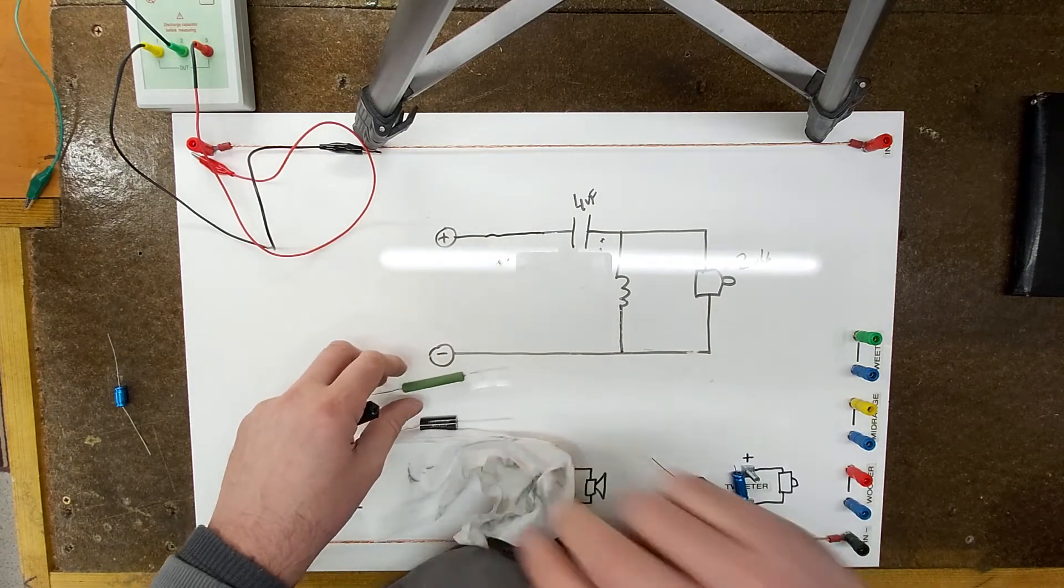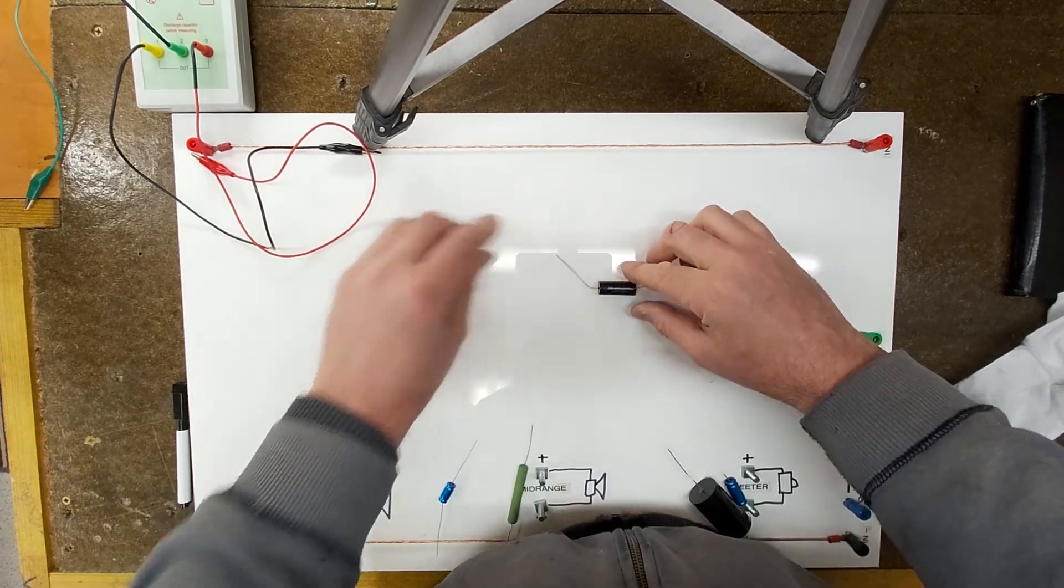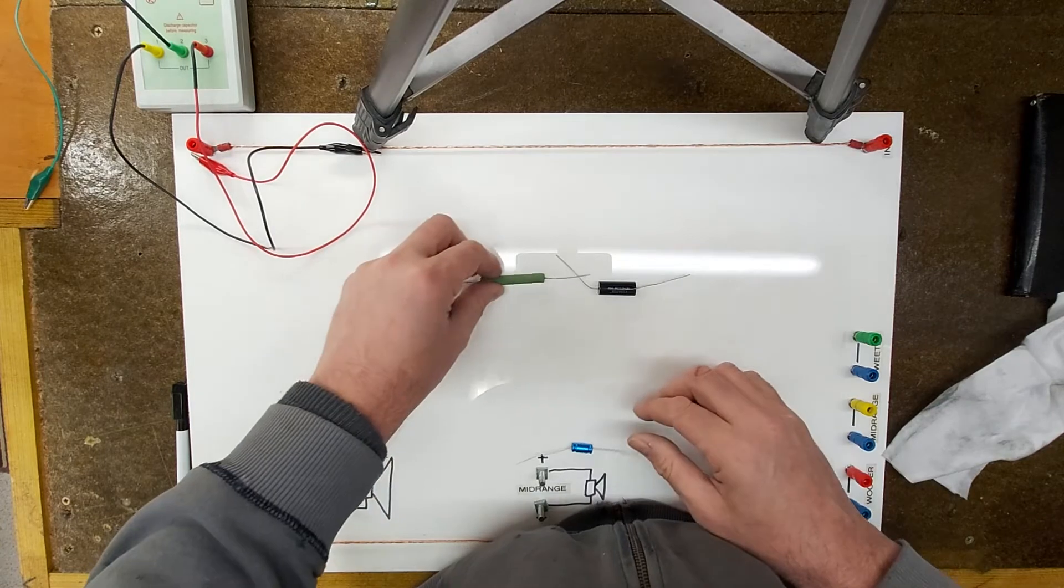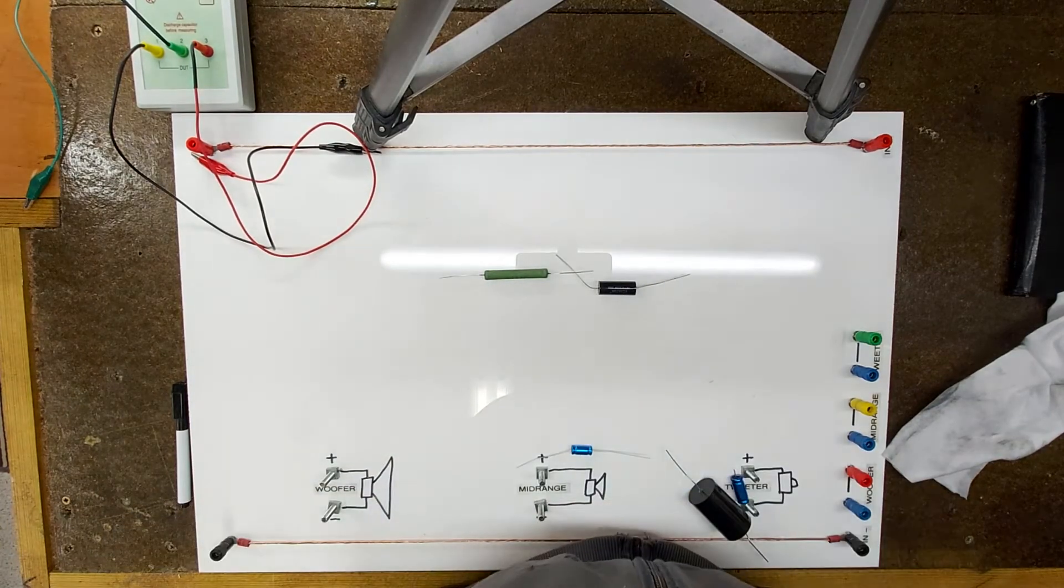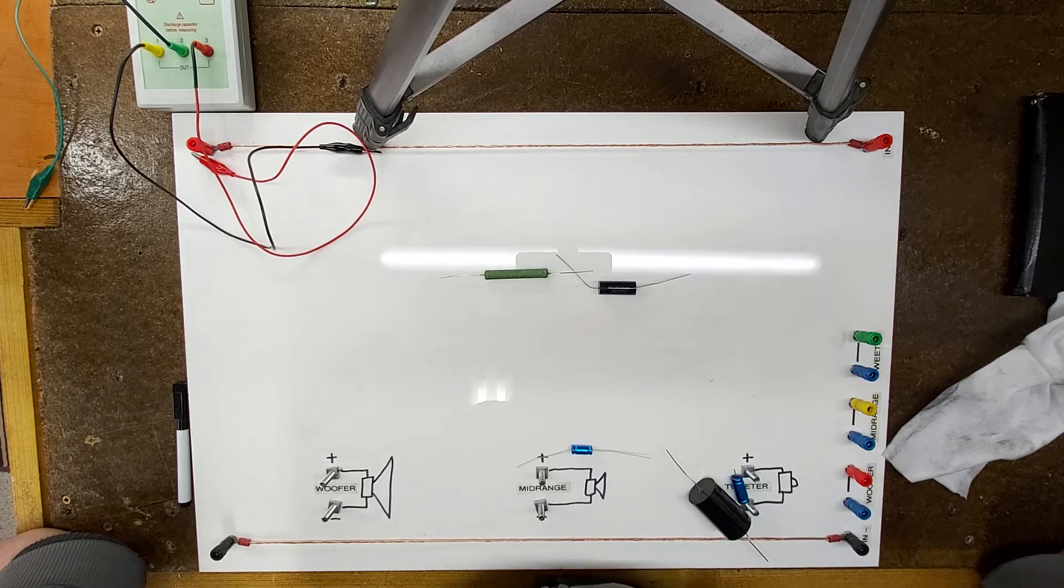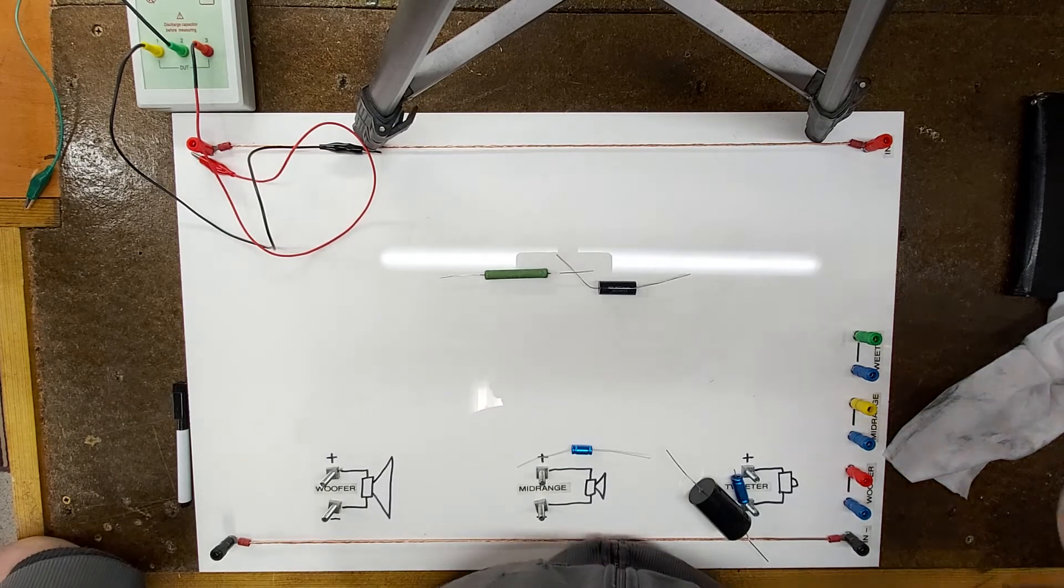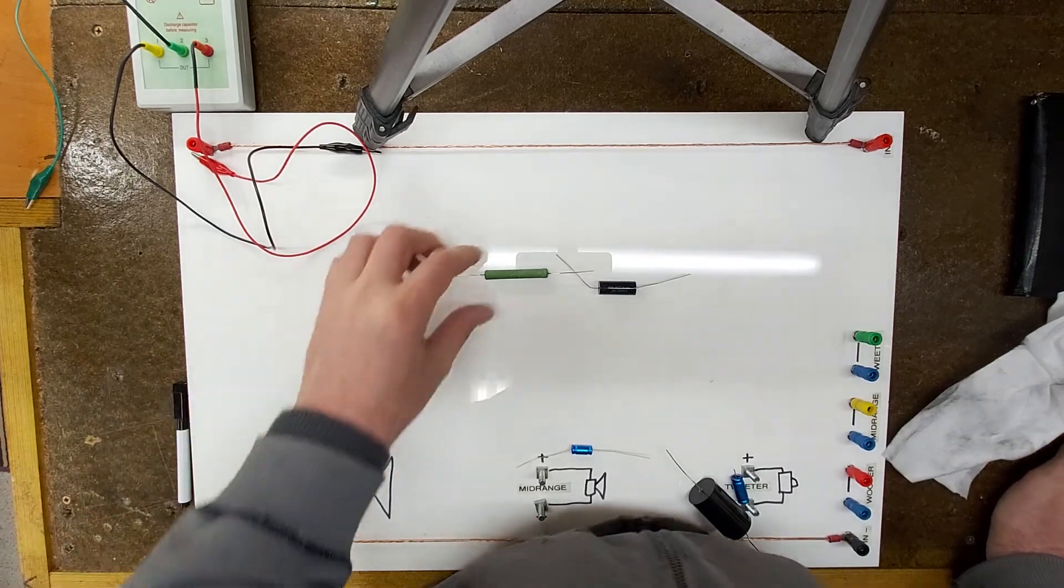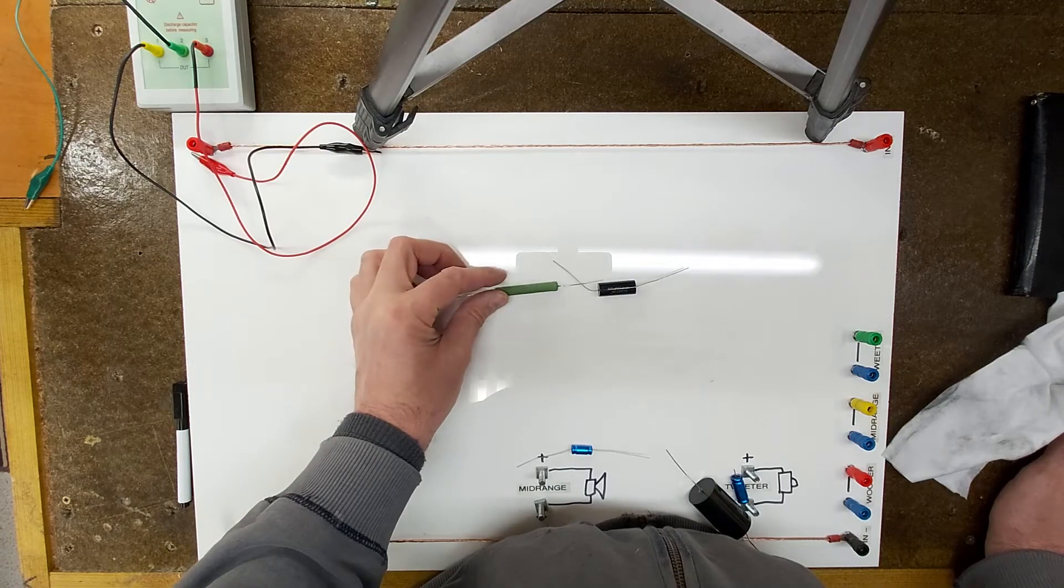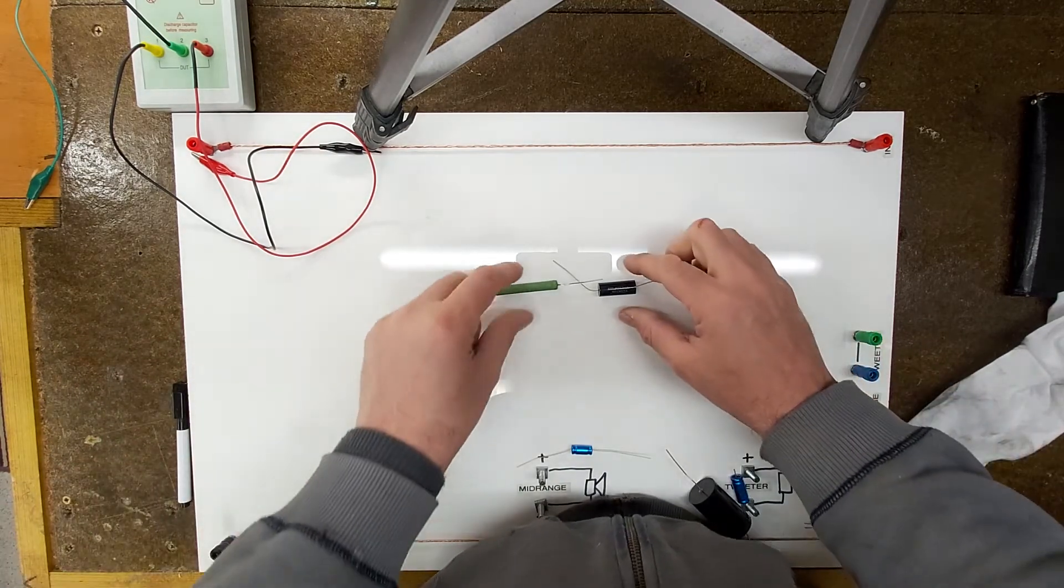So if you're going to start using poly caps in place of electrolytics, then don't be too surprised if you then need to add in a very small value resistor in front of them, like a half an ohm or one ohm, to bring that tweeter level back down to what it should be. But now you're adding another component in the signal path.